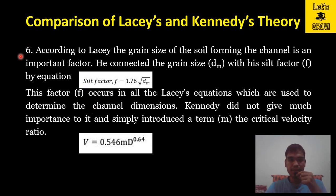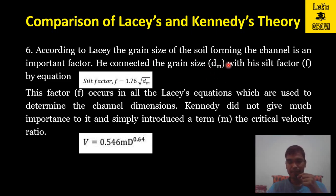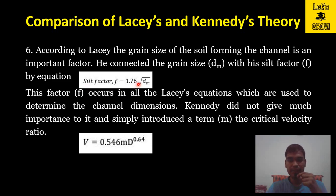Point six: according to Lacey, the grain size of the soil forming the channel is an important factor. He connected the mean particle size dm with the silt factor f by the equation f = 1.76√dm, where dm is in mm. This silt factor f appears in all of Lacey's equations used to determine channel dimensions.